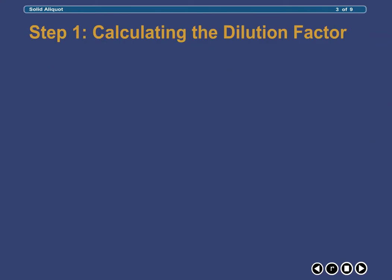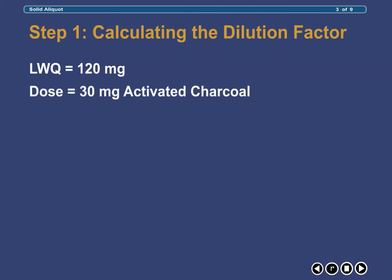Before proceeding further, let's start by inventorying what we know. First, we know that our least weighable quantity using a Class A torsion balance with a sensitivity requirement of 6 mg and a 5% margin of error in weighing is 120 mg. We also know that the amount of activated charcoal that we desire is 30 mg.